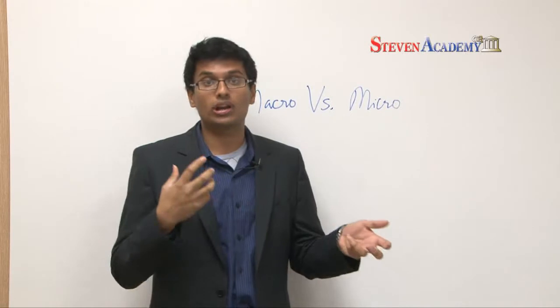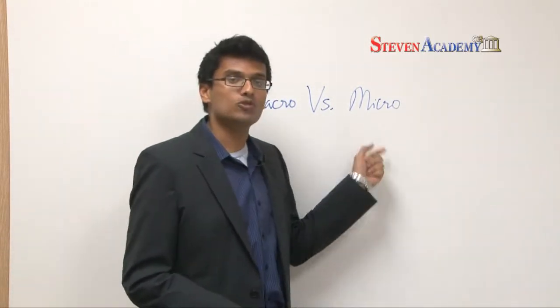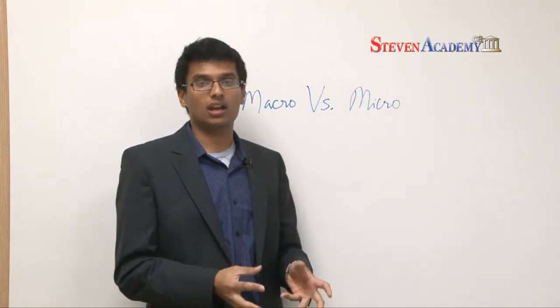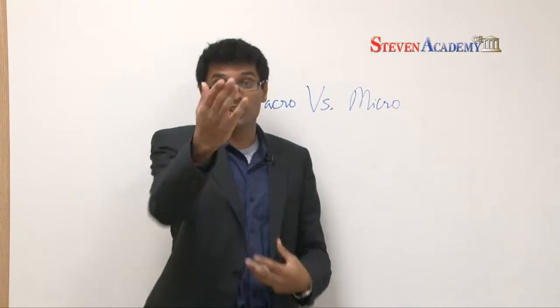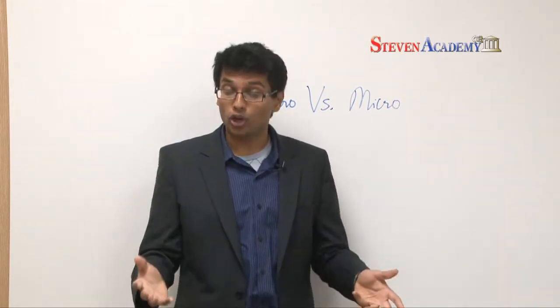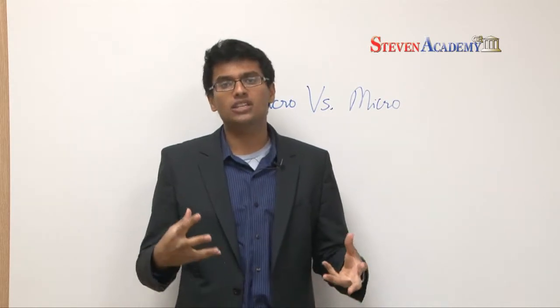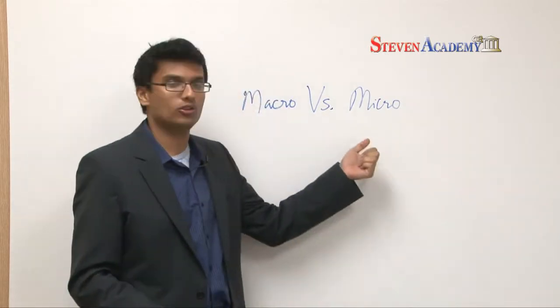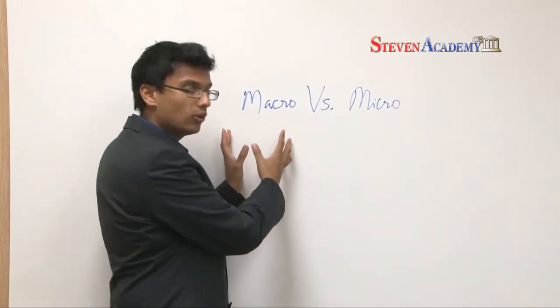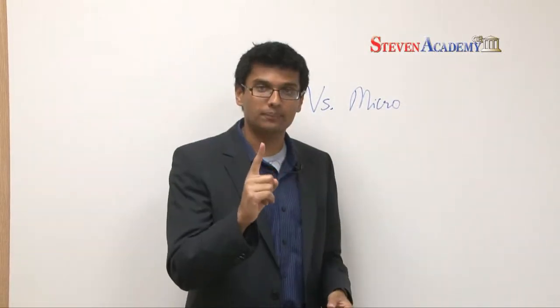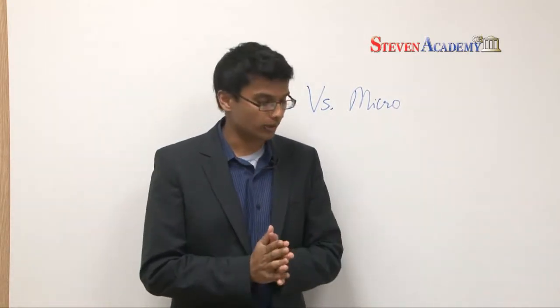The microeconomic level is really the individual units in an economic system. Example, me as an individual, you as an individual, firms like Steven Academy. So each of these firms are studied at the micro level. So if you imagine forest as being the economic macro level, the micro is just one tree. Does that make sense? So that's basically how macro and micro economics are dealt with.